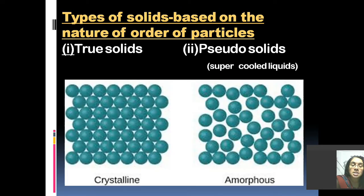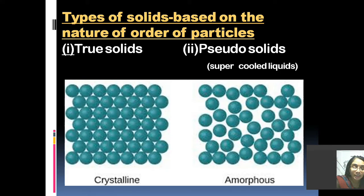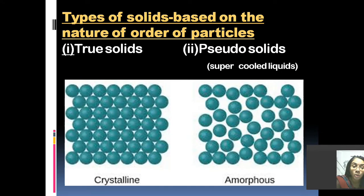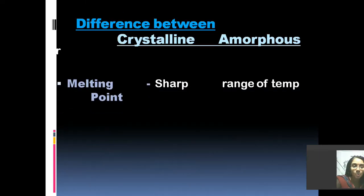Now let's move on to the types of solids. Based on the nature of the particles, we have true solids and pseudo solids. True solids are also known as crystalline solids, whereas pseudo solids are known as amorphous solids. From this picture it is very clear that in true solids the particles are well and orderly arranged — see how beautiful it is — whereas in amorphous solids the particles are not orderly arranged, and you can see the irregularity. This is one remarkable difference between these two solids.